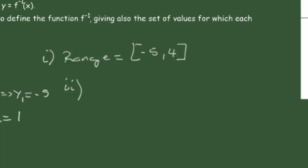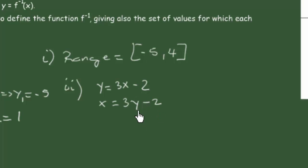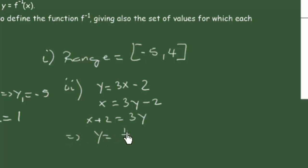For the first piece, y = 3x - 2. We switch x and y to get x = 3y - 2, then add 2 to both sides: x + 2 = 3y, and therefore y = (x + 2)/3. That is the inverse of the first function, which we can call y₁⁻¹.